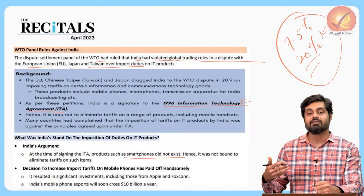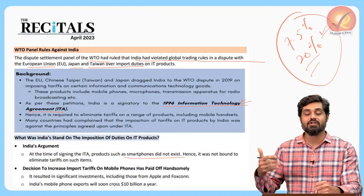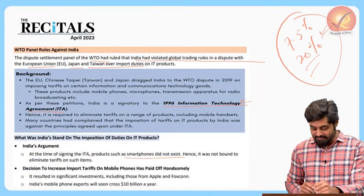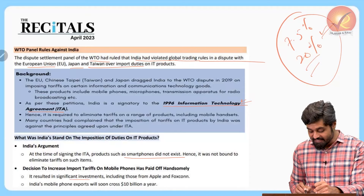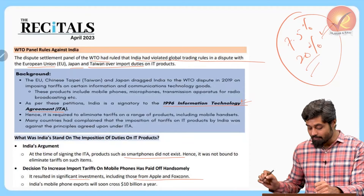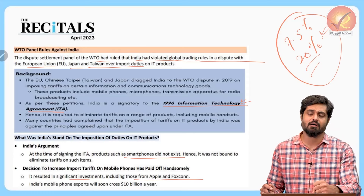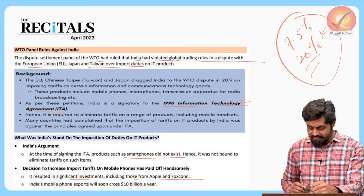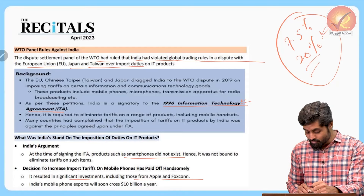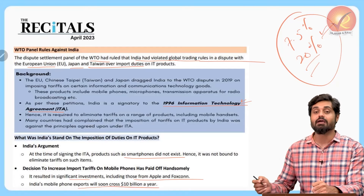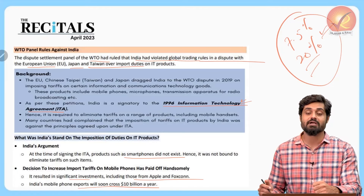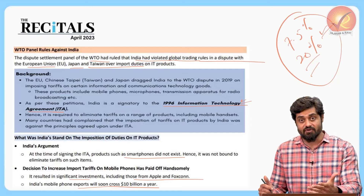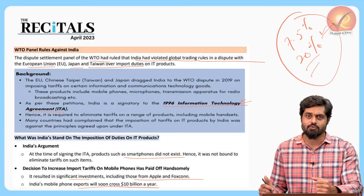India imposed duties on certain electronic components because it has resulted in significant investments from Apple, Foxconn, and other companies, which has added to employment creation in India. It has also led to an increase in exports of these components and products from India. Therefore, imposing these duties is economically beneficial for India.